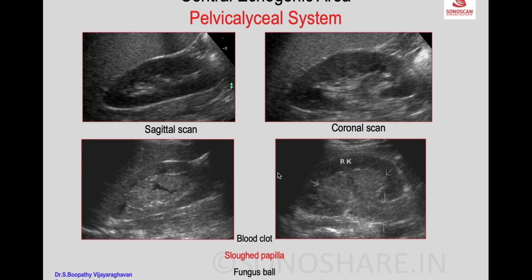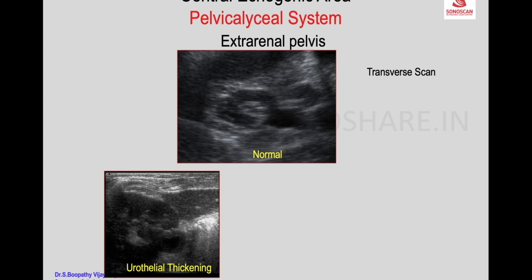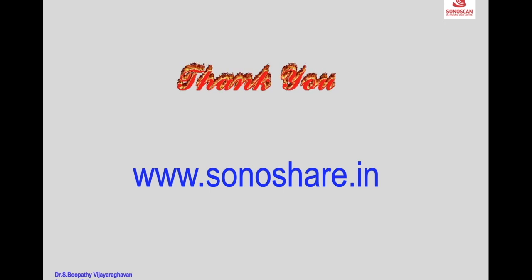The extrarenal pelvis is a normal variation where the renal pelvis is mainly extrarenal in location and, lacking the support of parenchyma, becomes baggy. This is appreciated on transverse scan: you see the extrarenal pelvis with thickening of the wall. In PUJ obstruction you see a hugely dilated extrarenal pelvis while the calyces are not much dilated, because pressure is taken up by the extrarenal pelvis. Thank you very much for your attention.